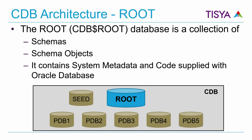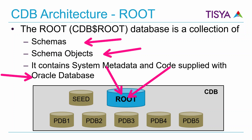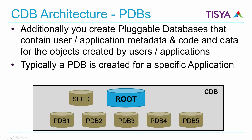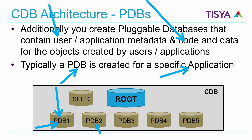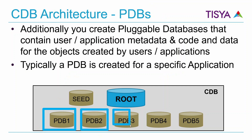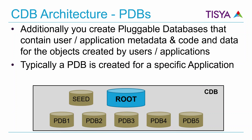The root database has a collection of schemas and schema objects. It contains the metadata and code supplied with the Oracle database. For every pluggable database you create — typically created for each application — the user-created objects, metadata, and code reside in the specific PDBs themselves. The whole idea is to consolidate independent databases, which were previously non-CDB databases, into a single CDB.